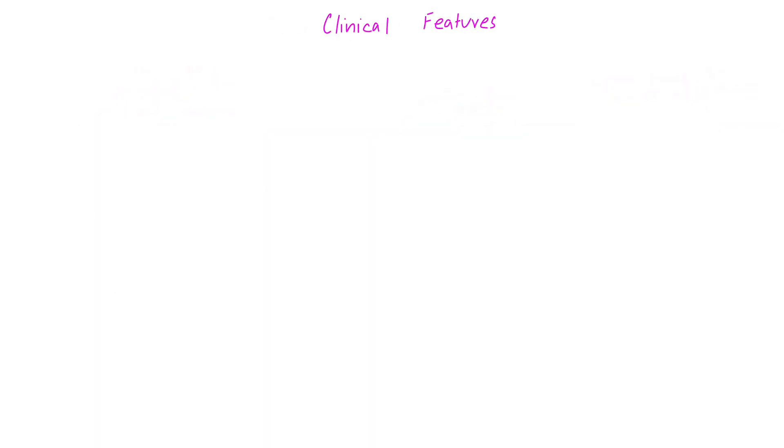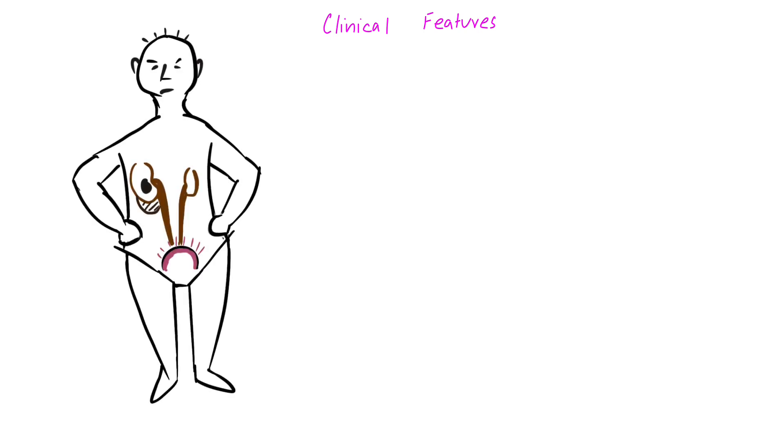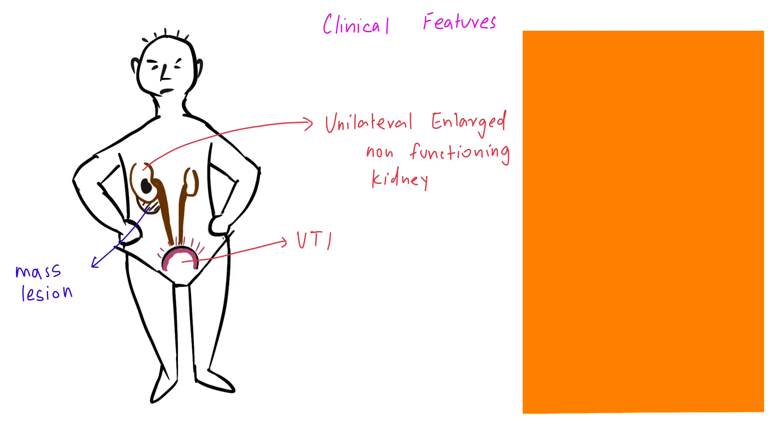Coming to clinical features of xanthogranulomatous pyelonephritis, it can be suspected in a patient if they have the following features: history of urinary tract infections which are often recurrent, along with a unilaterally enlarged non-functioning kidney with a mass lesion which can't be distinguished from carcinoma. As the kidney enlarges, it causes capsular stretch which causes flank pain.